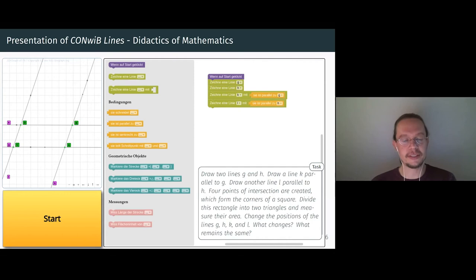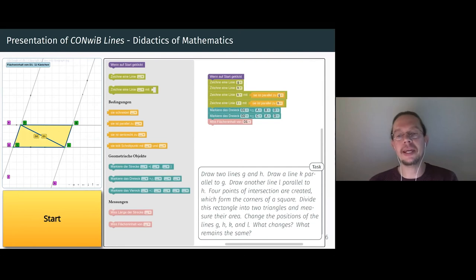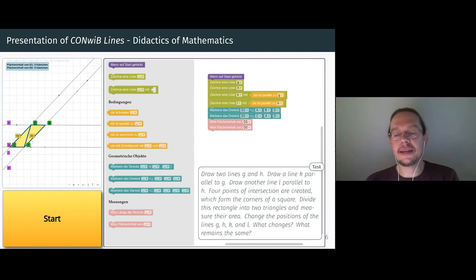We will continue on the task. We use the corners of the rectangle to mark triangles. So we mark the triangle D1 with the points A, B and D. For both triangles we measure the area F1 and F2. The measured area is displayed in the upper part of the output window. Now we can change the position of the straight lines and see what happens. We see that the area of D1 and D2 also changes. However, the values are the same for both triangles.